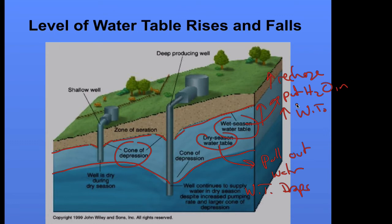As you'd expect, higher rates of evaporation and increased temperatures in summertime cause the water table to drop. Then in spring, with snowmelt and increased precipitation, we have more recharge and the water table goes back up.